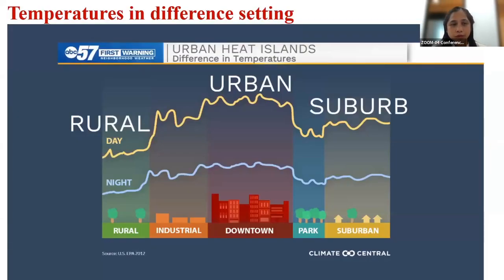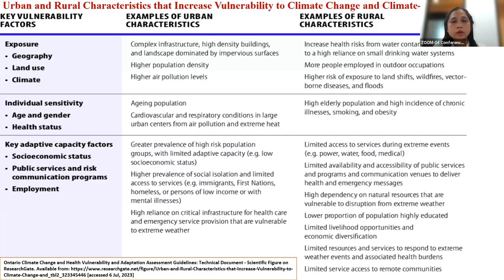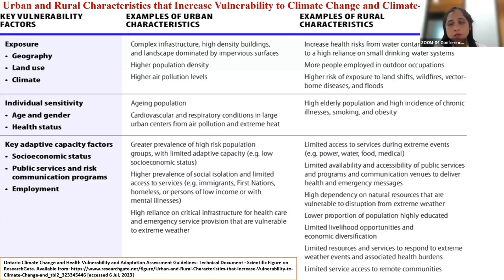When discussing disaster reduction, please consider climate and climate change and its impact across different scenarios — rural, urban, and suburban — as these three areas have different impacts and different temperatures. In urban areas, higher population density means higher exposure. In rural areas, vulnerability to climate impact is also significant — for example, more people are employed in outdoor activities. Regarding individual sensitivity, aging population is a concern in urban areas, while rural areas have high elderly populations and high incidence of chronic illness and smoking.